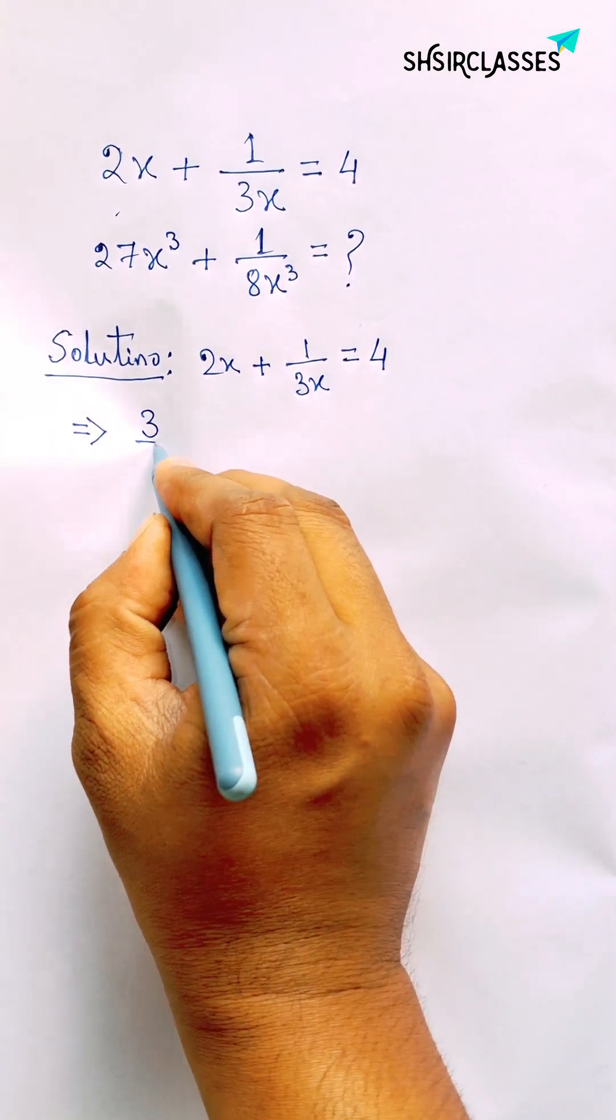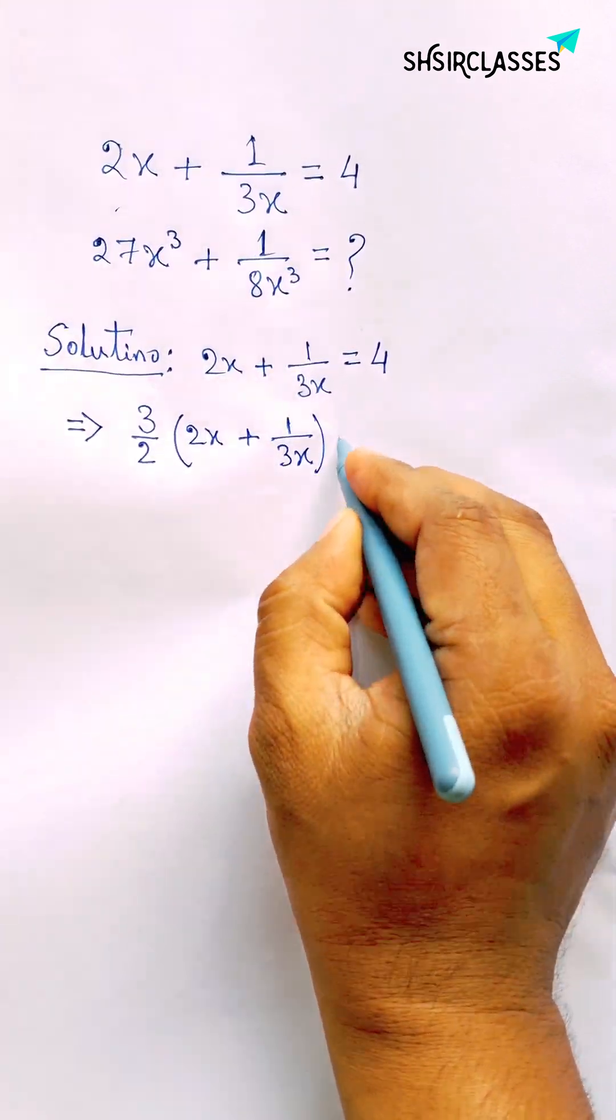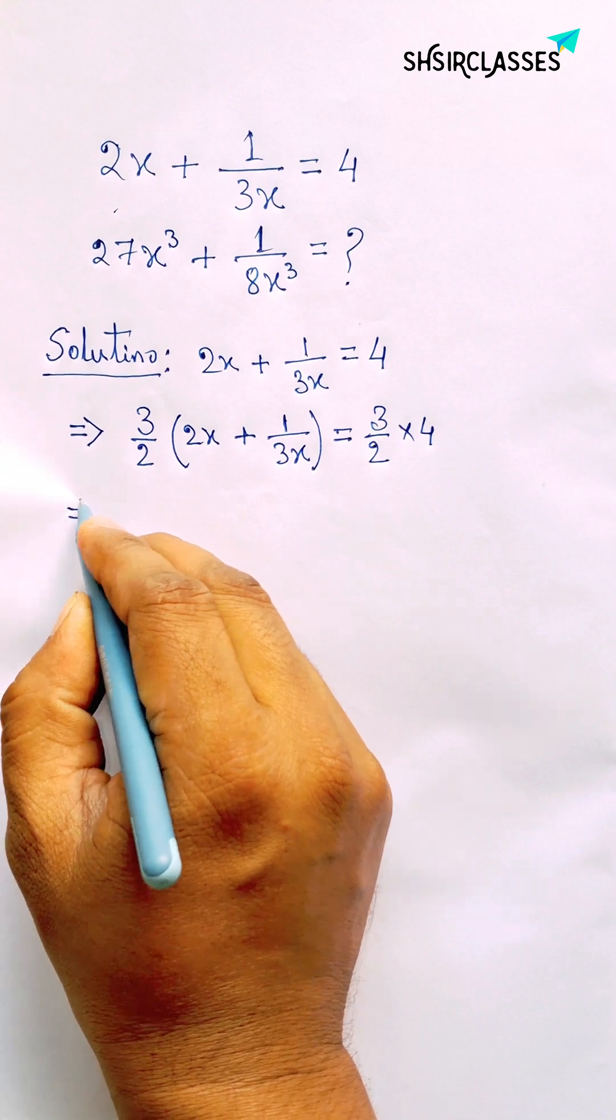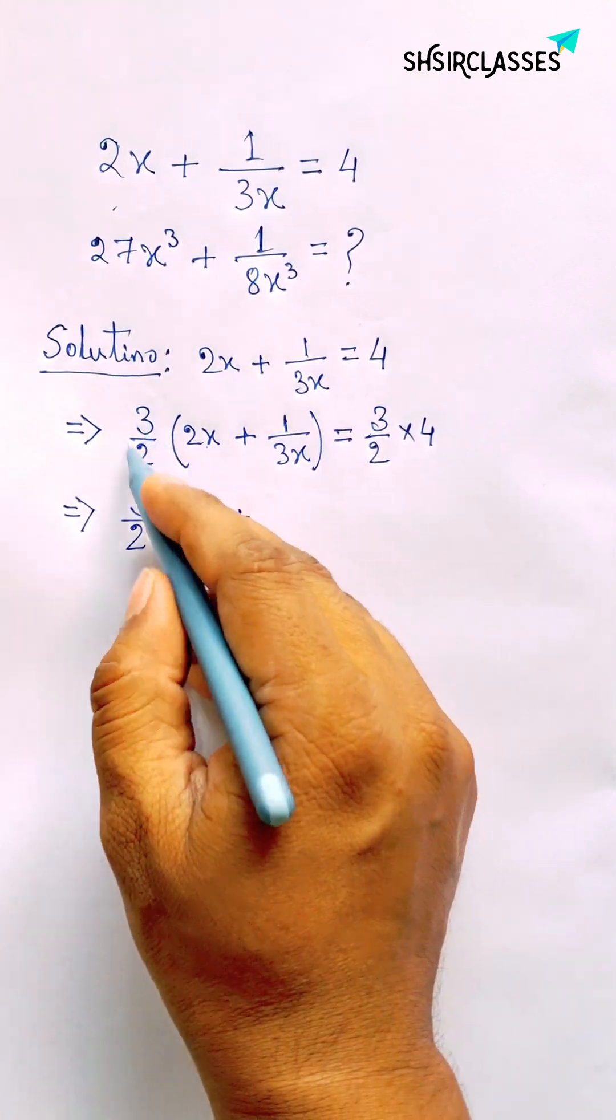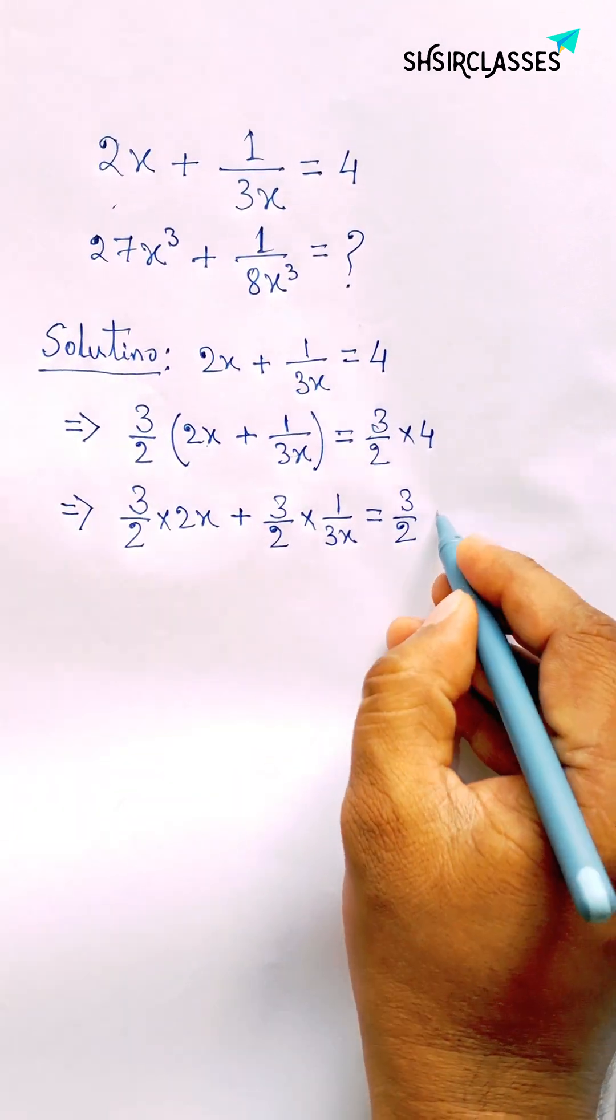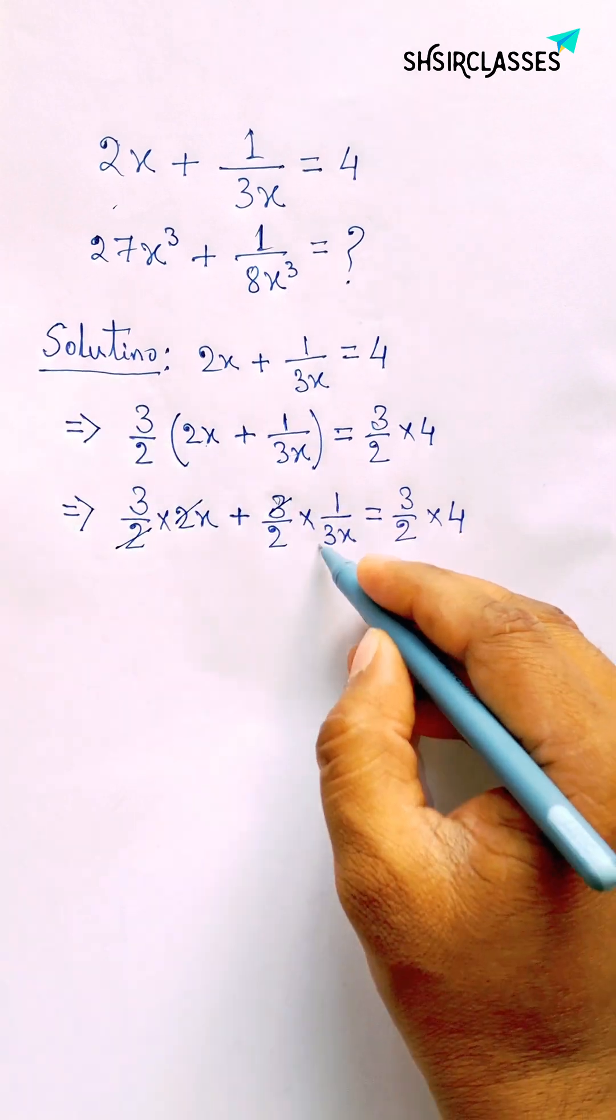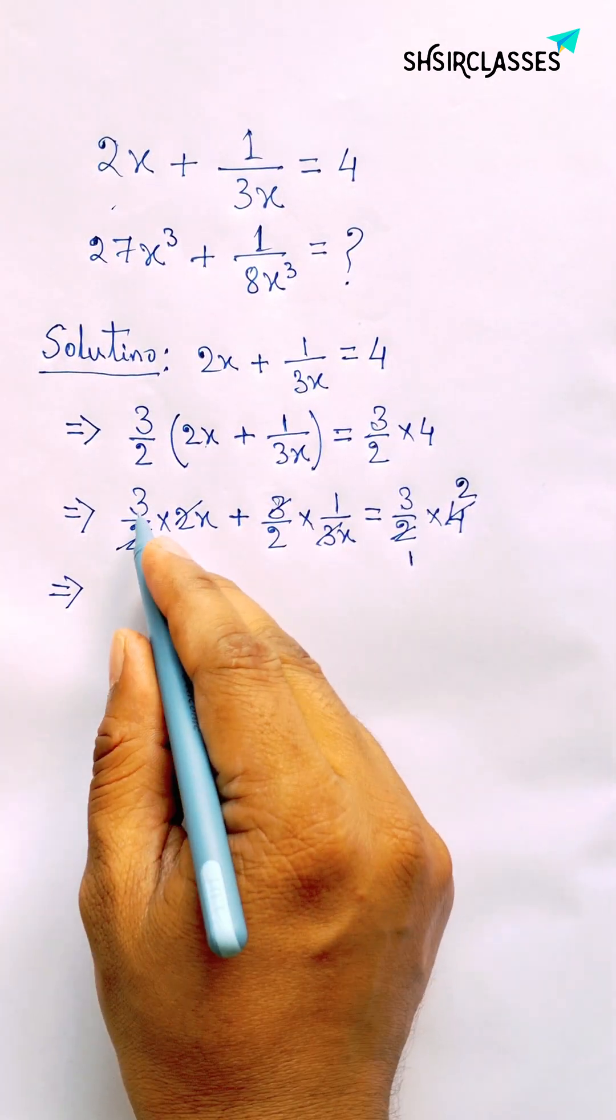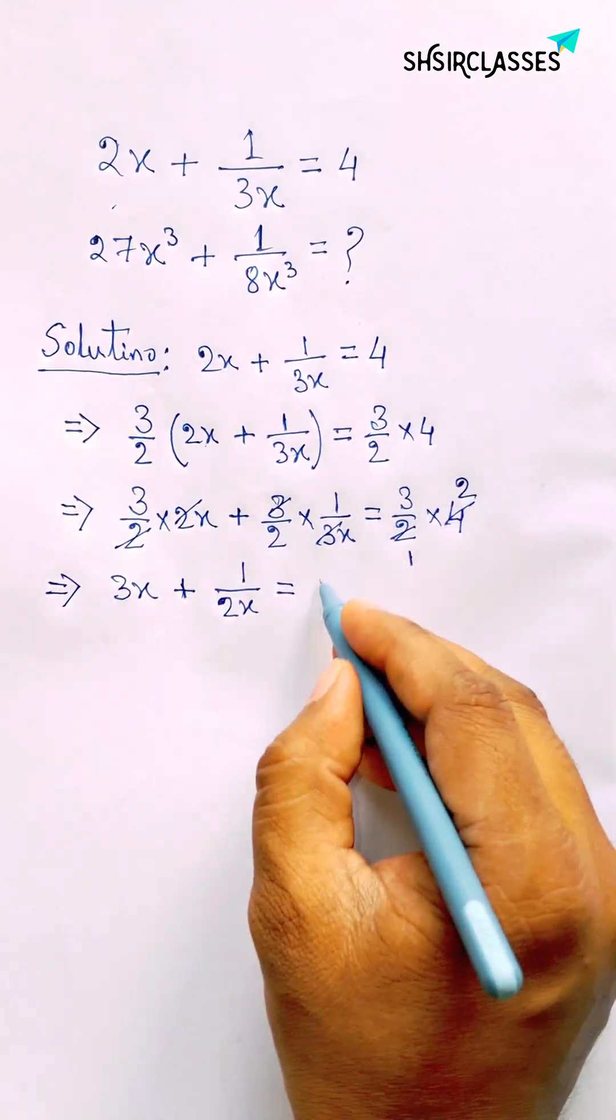First of all, multiplying on both sides by 3 by 2. Next, simplifying this: multiplying 3 by 2 with 2x plus 3 by 2 into 1 by 2x equals 3 by 2 into 4. Now simplifying here, so finally we got 3x plus 1 by 2x equals 6.